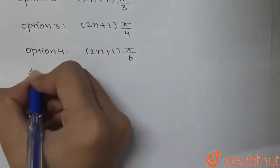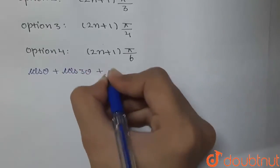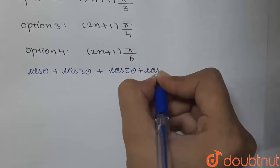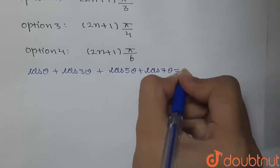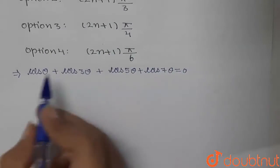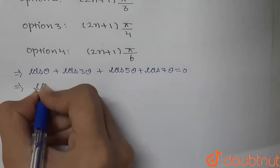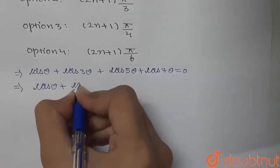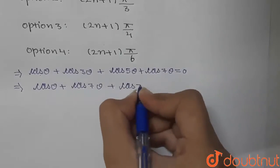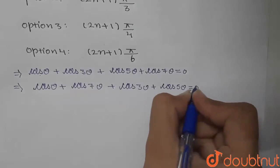We are given cos θ + cos 3θ + cos 5θ + cos 7θ = 0. First of all, we will do grouping. I am writing cos θ and cos 7θ together, and cos 3θ and cos 5θ together. So this becomes (cos θ + cos 7θ) + (cos 3θ + cos 5θ) = 0.